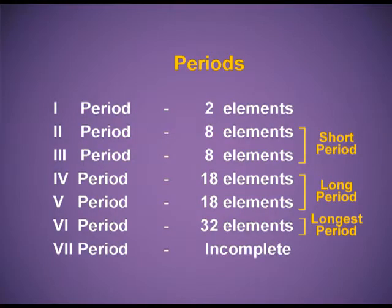Period one has two elements. Second period has eight elements. Third period has again eight elements, and the second and third periods together are known as the short periods. Fourth period has eighteen elements. Fifth period has eighteen elements, and periods four and five are known as the long periods. Sixth period consists of thirty-two elements — the longest period.